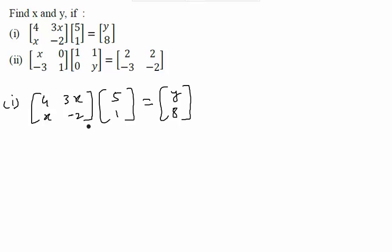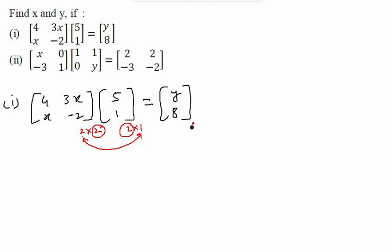The restriction is that we will have to check the order of the given matrices. The order of the first matrix is 2x2 — two rows and two columns. The order of the second matrix is 2x1 — two rows, one column. We can multiply these two matrices because the number of columns of the first matrix is the same as the number of rows of the second matrix. The final result after multiplication is of order 2x1, which is correct.